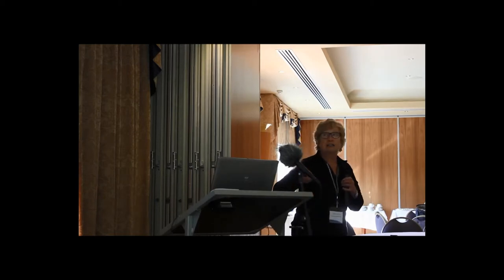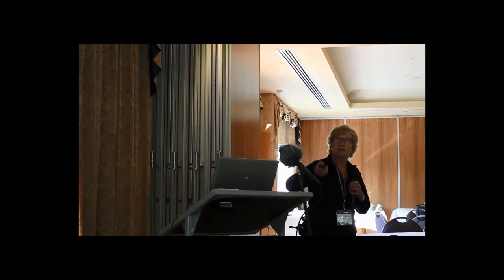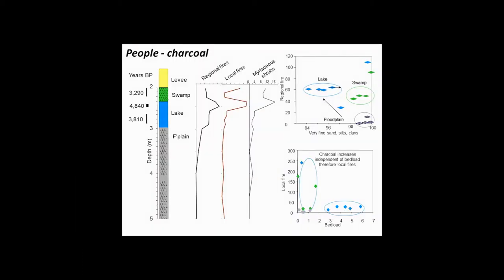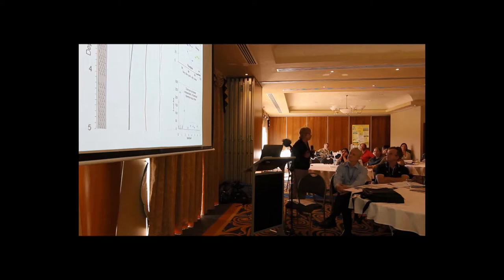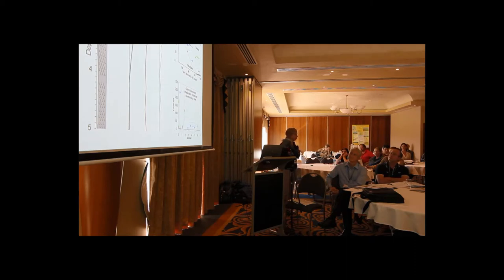This is charcoal particles. The regional charcoal fires that I've got there, a lot of that charcoal is actually coming down with the sediments, so it's very difficult to say what the fire regime was like. The local fires, the large charcoal particles, were local. And as the swamp developed, the lake started to dry out, the swamp developed, people started to use this site. They were burning it, there was burnt Cyperaceae on it, so we're very lucky to find something like this. And at the same time, there was a big increase in Myrtaceae pollen. That also happened when Europeans arrived and changed the fire regime, and people described all the scrub that turned up.